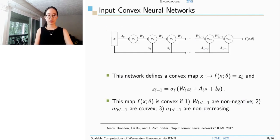We call input convex neural networks ICNN for shorthand. ICNN defines a convex map from x to zL. As shown in this picture, ICNN's structure is composed by two routes. Each layer output zL+1 is equal to WL·zL plus AL·x + BL followed by an activation function sigma. And this map is guaranteed to be convex if W1 to WL-1 are non-negative, sigma 0 to sigma L-1 are convex, and sigma 1 to sigma L-1 are non-decreasing.